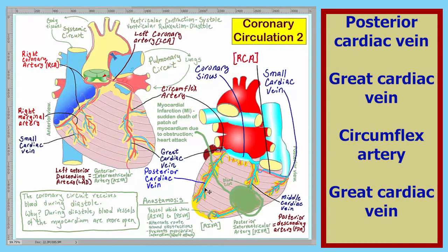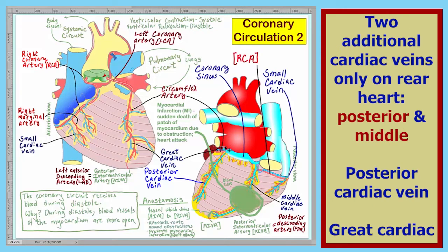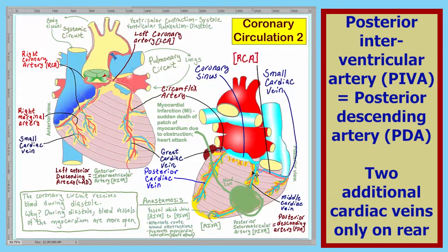The vein here on the back of the heart is the posterior cardiac vein. There are two cardiac veins on the rear of the heart, the posterior cardiac vein and the middle cardiac vein. The artery in this area is the posterior interventricular artery, also known as the posterior descending artery, the PDA.